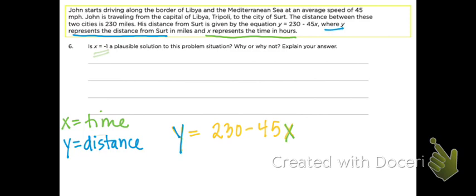Can x equal negative 1? You need to remember what x represents — it's time in hours. So can time in hours be negative 1? Why or why not?